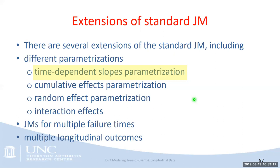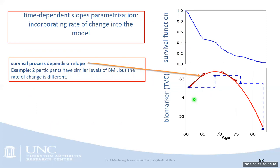The time-dependent slope parameterization allows incorporating rate of change into the model, where the survival process can depend on slope. Consider two participants with the same level of biomarker but different rates of change — for example, two people with BMI of 25, but one is losing weight while the other is gaining weight. This extension is very useful in clinical practice when the doctor looks not just at the level of a biomarker but also at its trajectory direction.